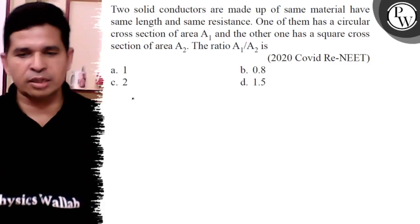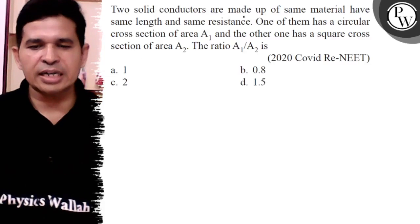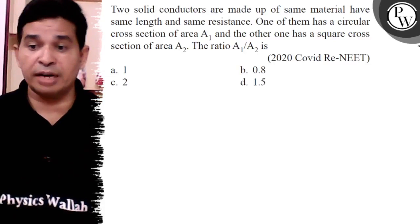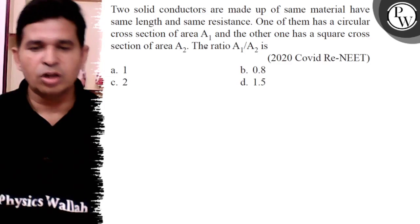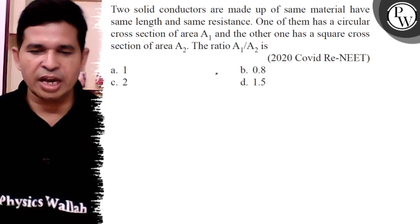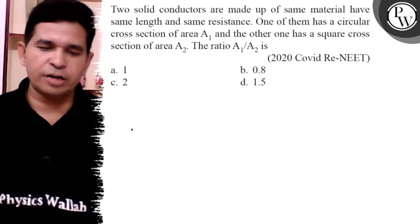Let us see this question. Two solid conductors are made up of the same material, have the same length and same resistance. One of them has a circular cross section of area A1, and the other one has a square cross section of area A2. The ratio A1 to A2 is...